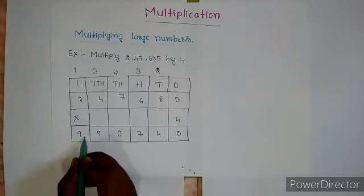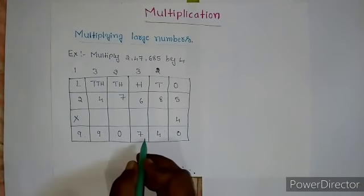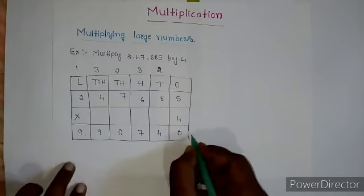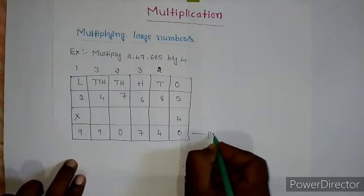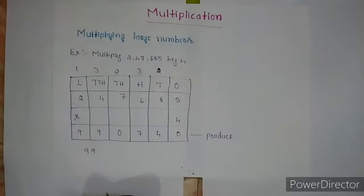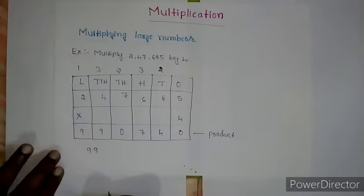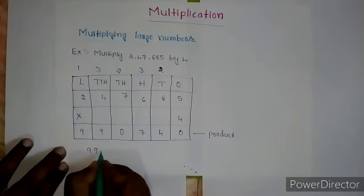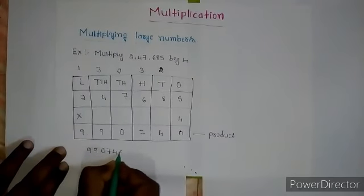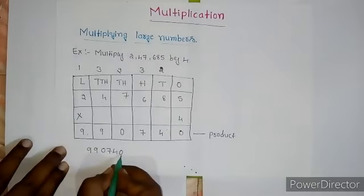9,90,740 is the product. Students, now I am going to put a comma.